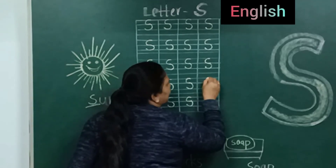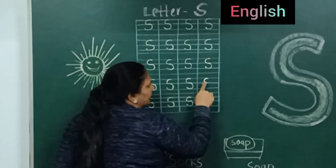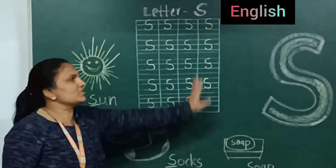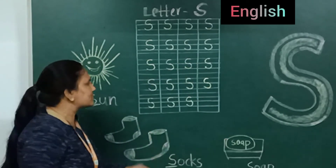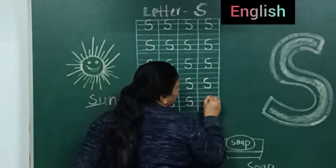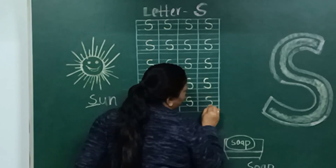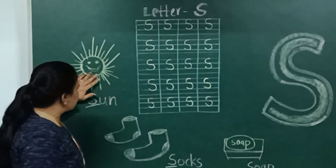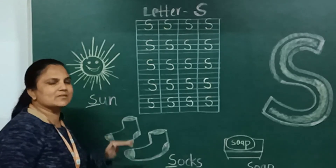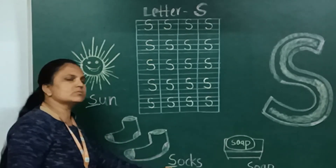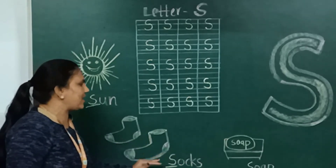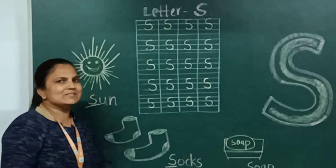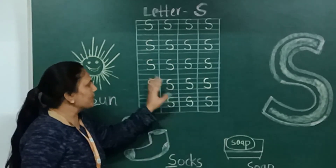First, put your pencil on the red line and we will make a curve to the first blue line. And then we will make another curve to the second blue line. Which letter is this? Letter S. S for sauce. S for sun. S for socks — S, O, C, K, S. S for soap — S, O, A, P. S says S. So here we have completed our lesson for letter S.